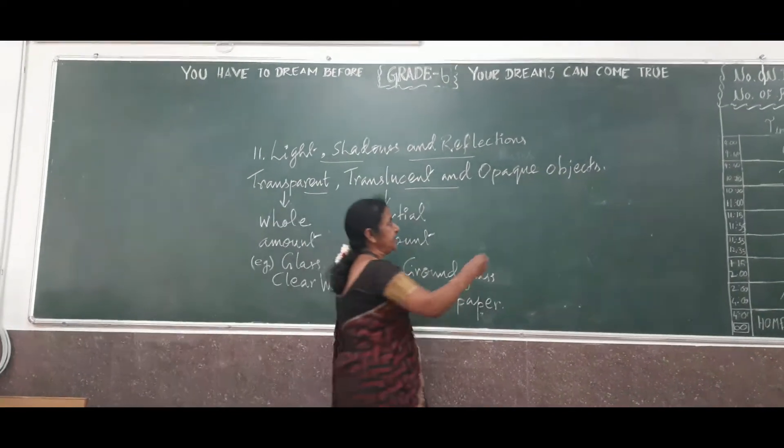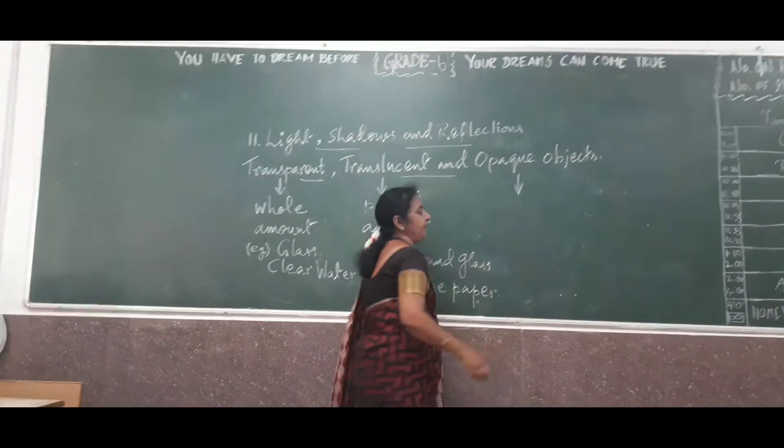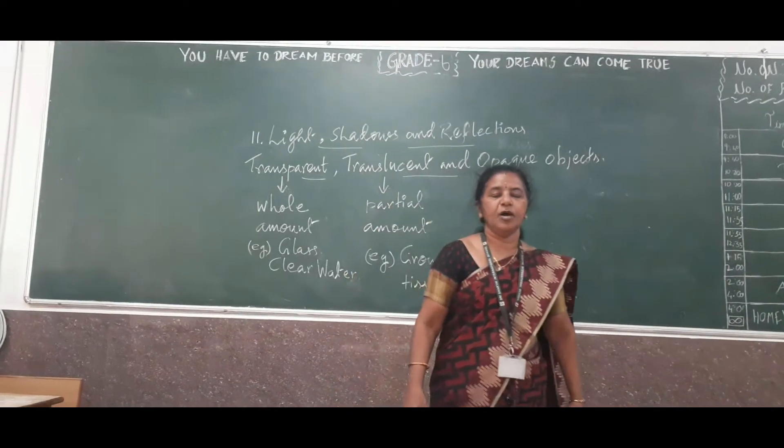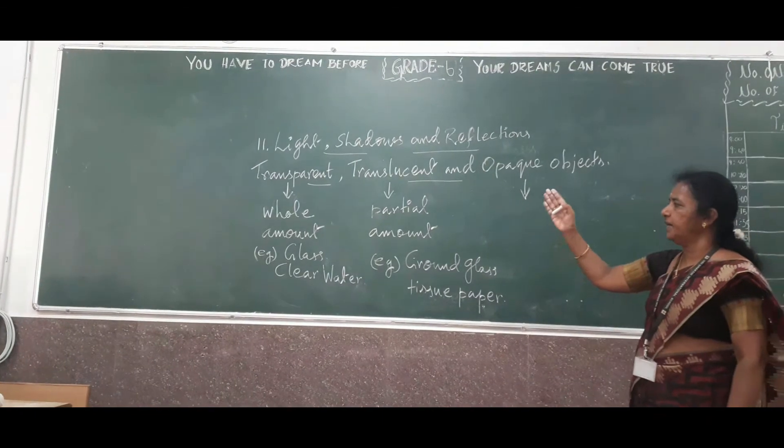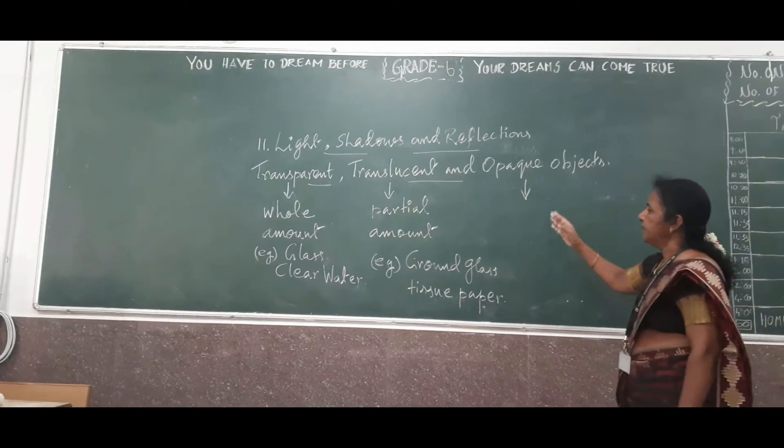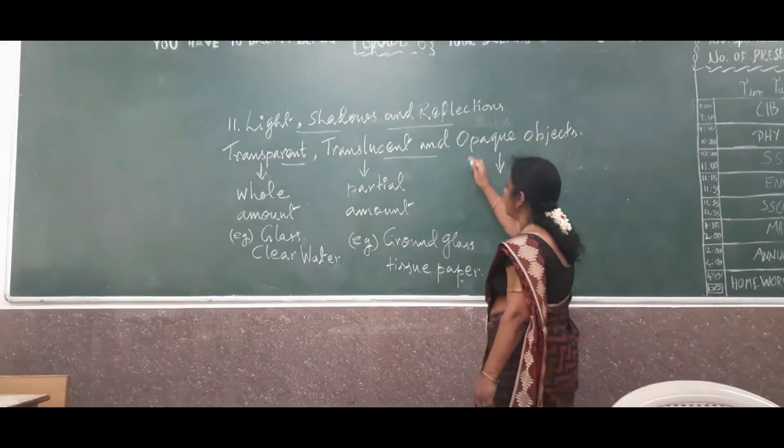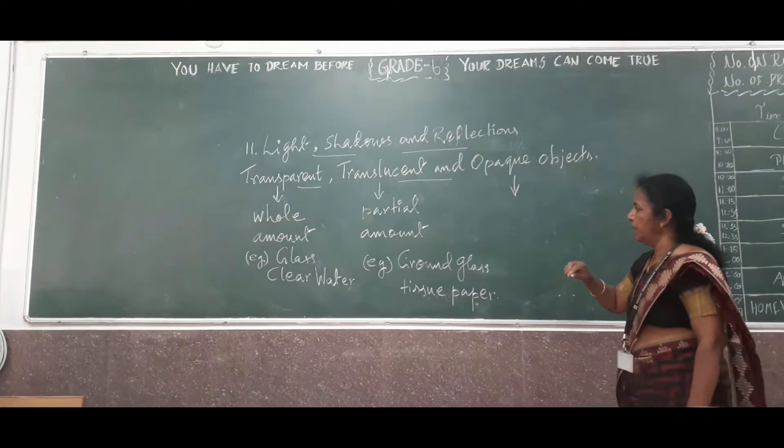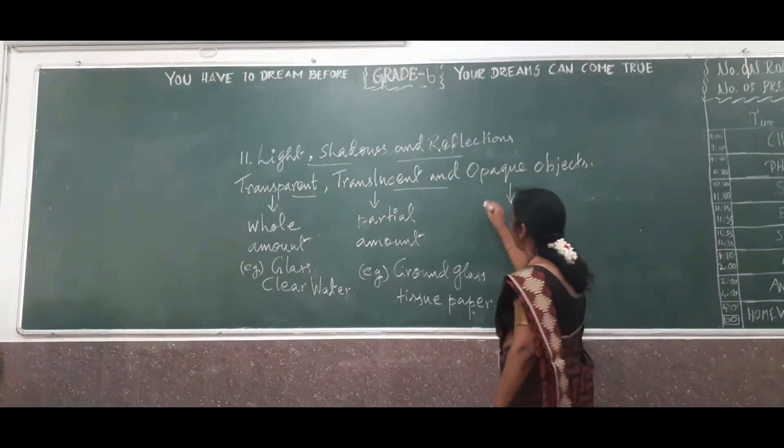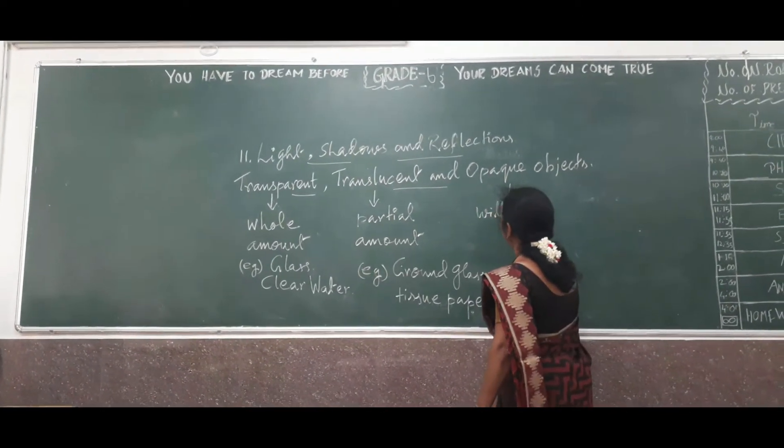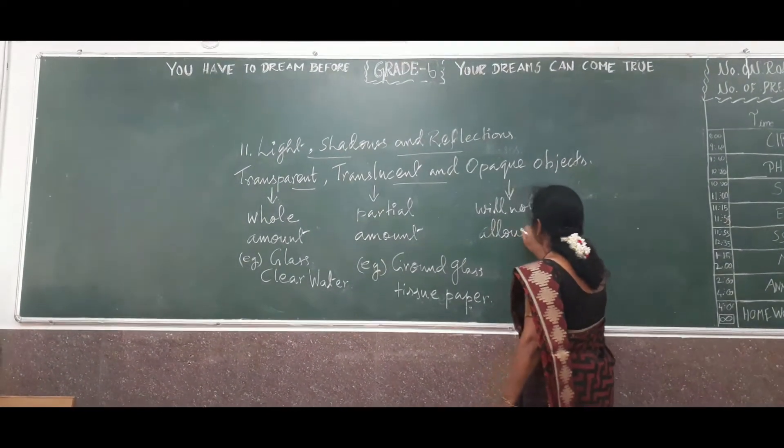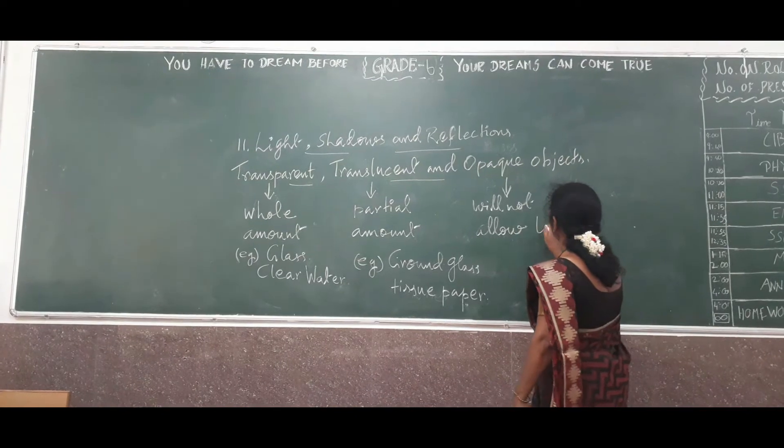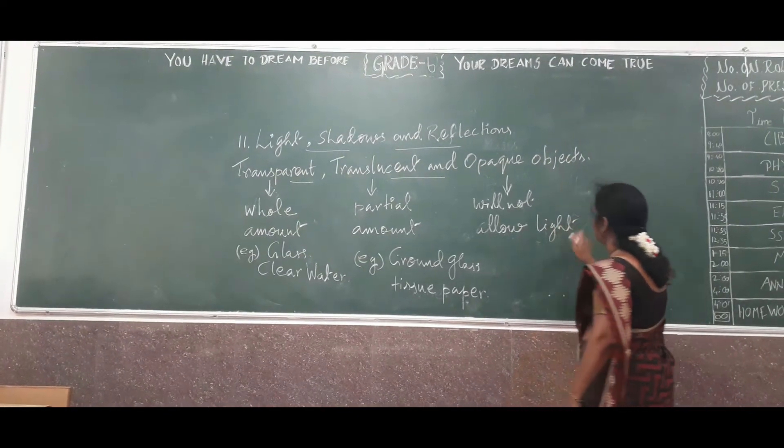And lastly, what is meant by opaque objects? The objects which do not allow light at all. We have seen transparent and translucent, and here, the objects will not allow the light to pass through it. Then, it is called as opaque objects.